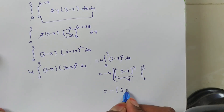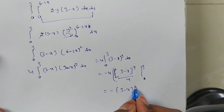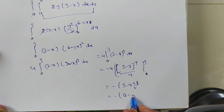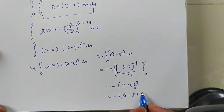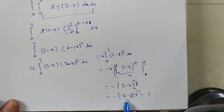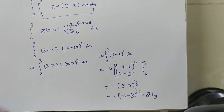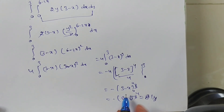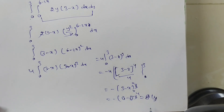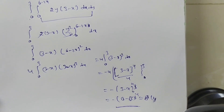Integrating (3 − x)³: bracket derivative is −1, so write −1 outside, giving −(3 − x)⁴/4 evaluated from 0 to 3. Substituting upper limit x = 3: (3 − 3)⁴ = 0. Substituting lower limit x = 0: (3)⁴ = 81. Result: −(1/2) × [0 − 81] = −(1/2)(−81) = 81/2. So the final answer is 81/2.